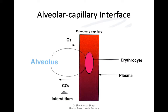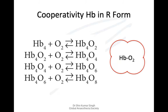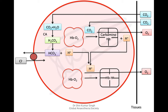Hemoglobin then takes up oxygen to be delivered to the tissue level, and this happens very quickly. Hemoglobin in its R form — that is, the relaxed form — has cooperativity. Once one molecule of oxygen is combined with hemoglobin, it rapidly allows the combination of the other three molecules. This is called cooperativity of hemoglobin to pick up oxygen.